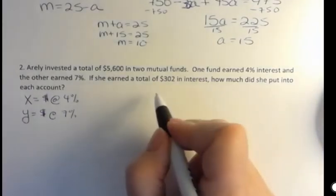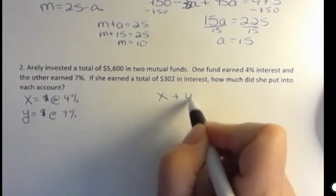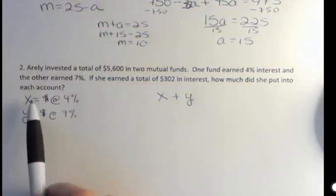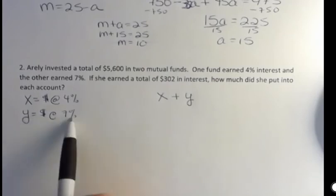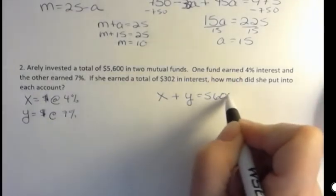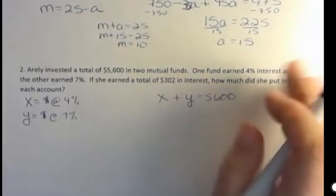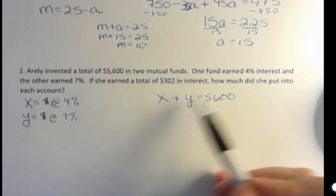And my first equation has to do with how much she put into both accounts together. So all the money invested at 4% and at 7% totals up to $5,600. Now the second equation, like the second equation above, has to do with the interest earned.